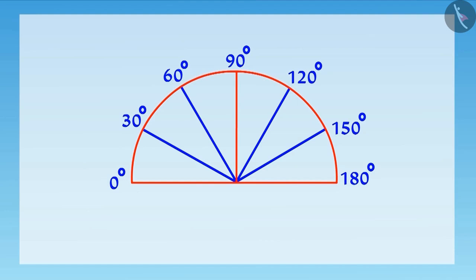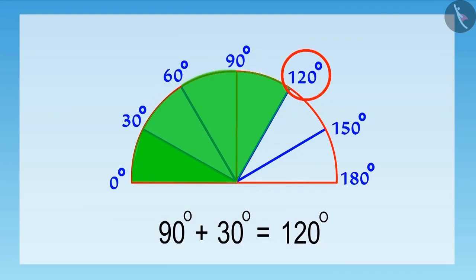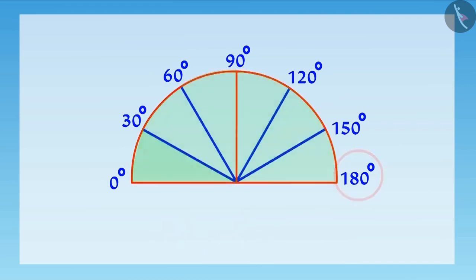And, if we count from zero, then this first angle will be 30 degrees. Second, 60 degrees. Similarly, on adding 30 degrees to each of these angles, the last angle will be 180 degrees. Here, our protractor is ready.